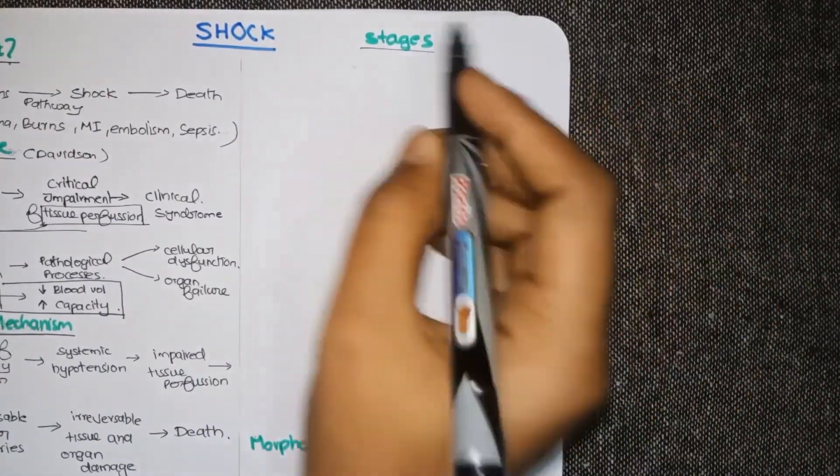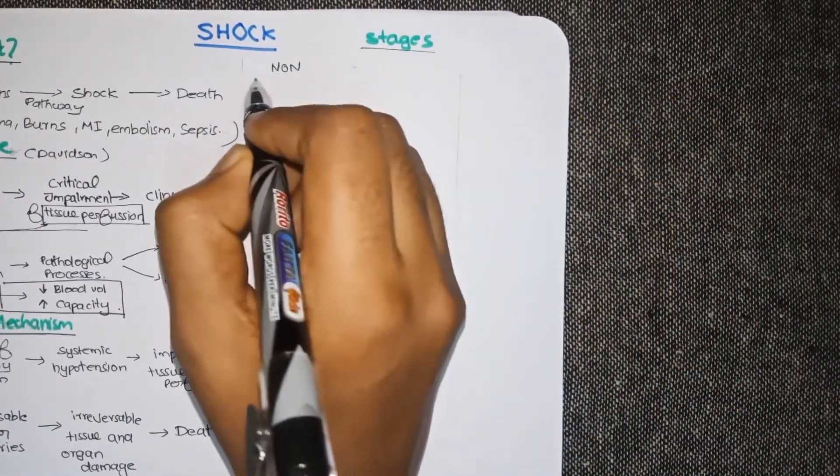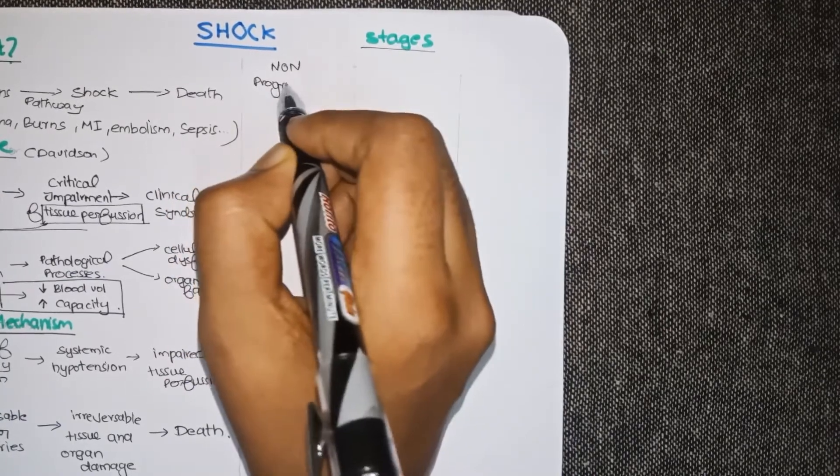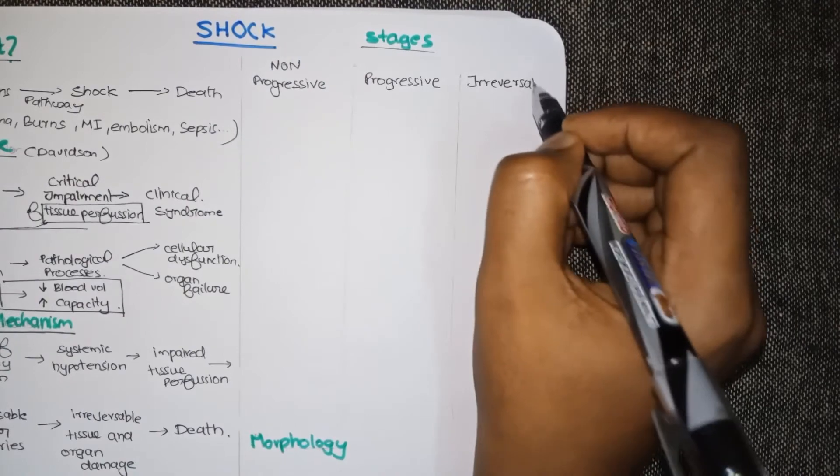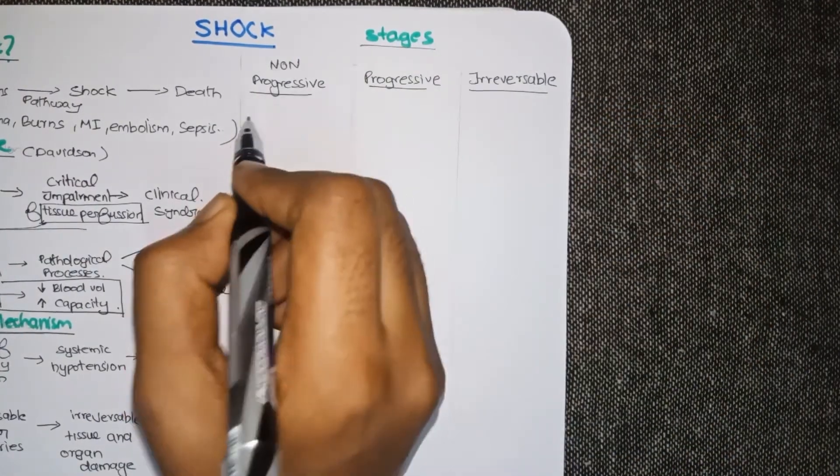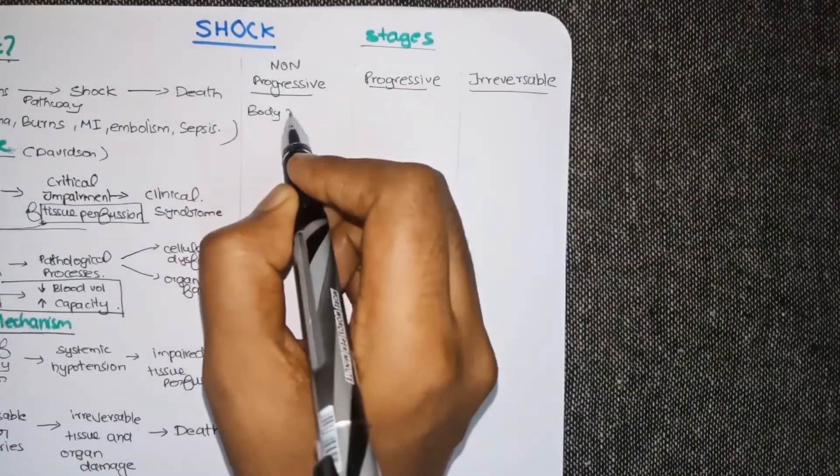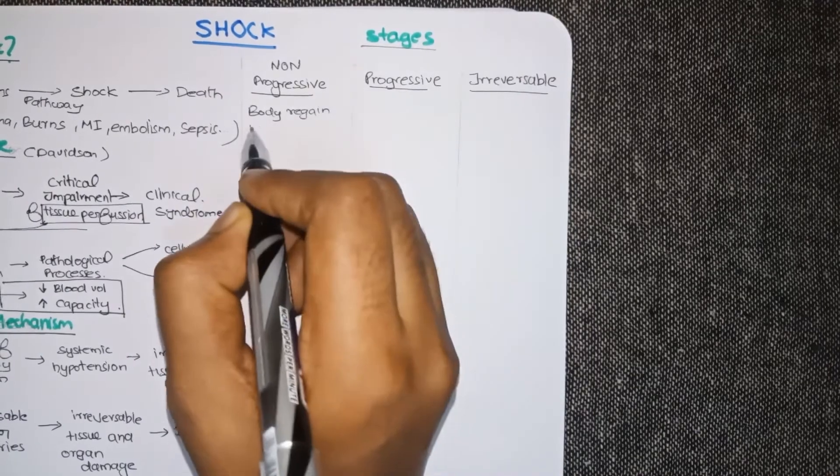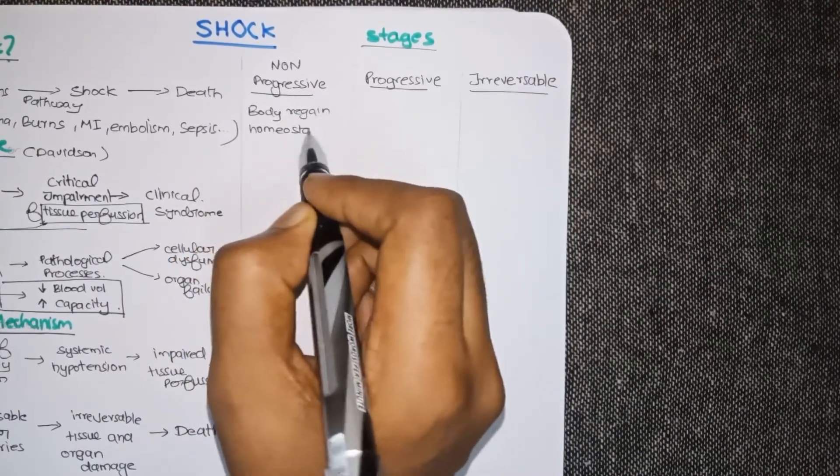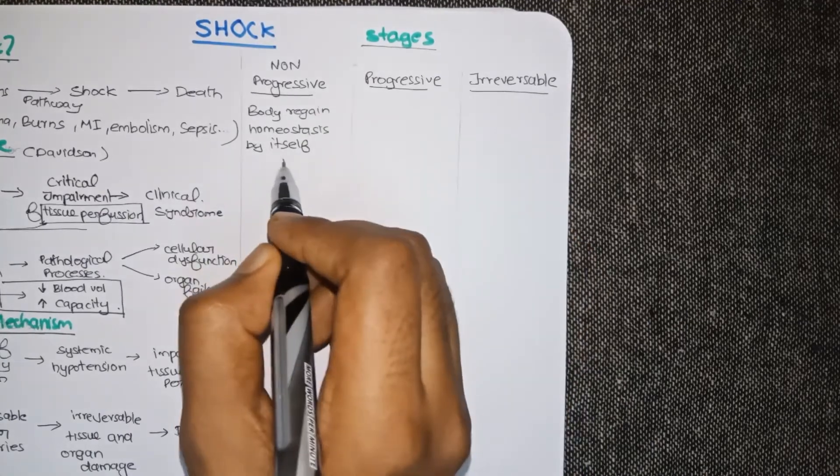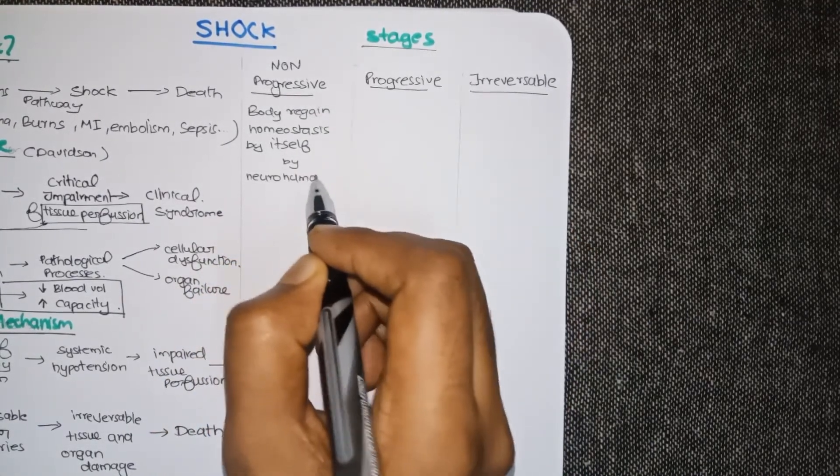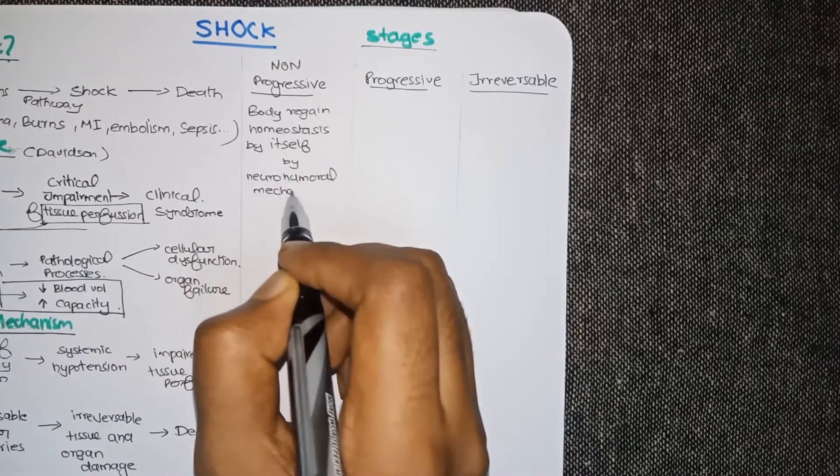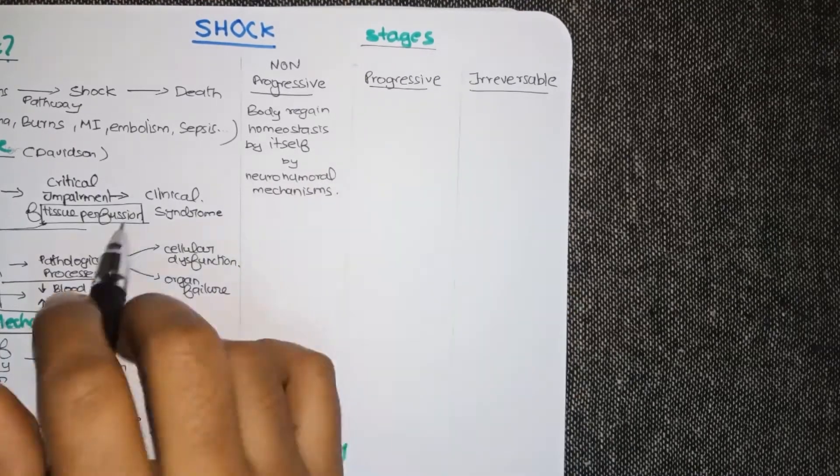Now let us move on to the stages of shock. Depending on the progression it can be non-progressive, progressive and irreversible. At a non-progressive stage the body can regain all the disrupted homeostasis by itself. This is through various neurohumoral mechanisms that we studied like baroreceptor, renin-angiotensin mechanism etc.